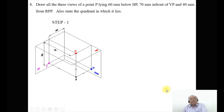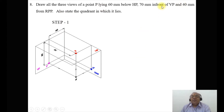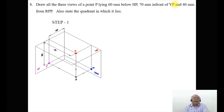We also have the condition of 70 mm and 40 mm from RPP. Since the point is in front of VP, it should obviously be in front of RPP as well. We will ensure and consider how this will be explained.